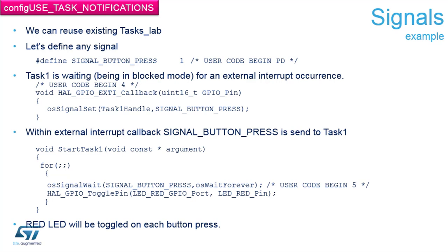If in the start task we are waiting for the button press forever, and we press the button, the interrupt will give the task a signal. The task will be awakened and then proceed with whatever we want it to. This gives you a very efficient synchronization between interrupts and tasks.